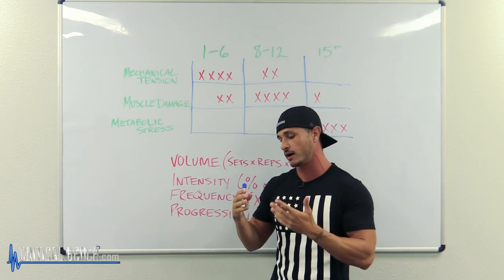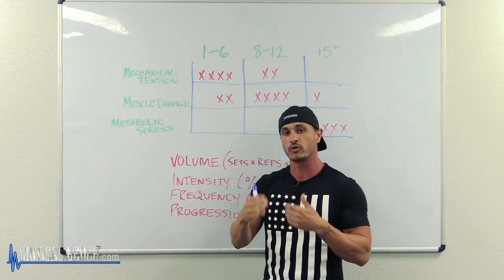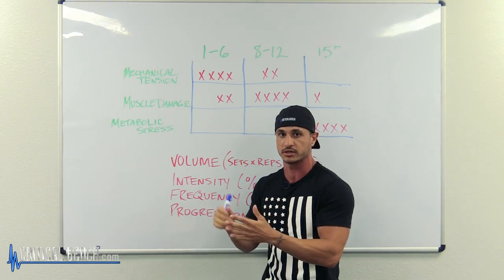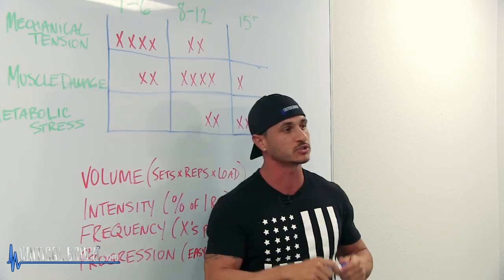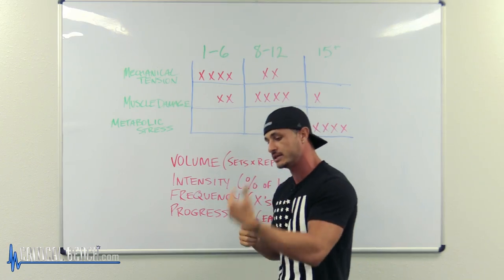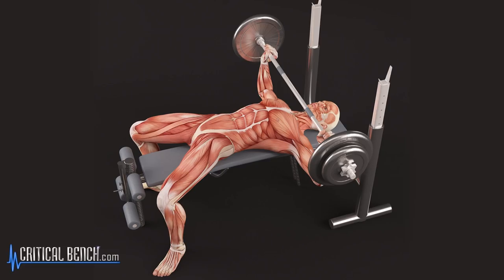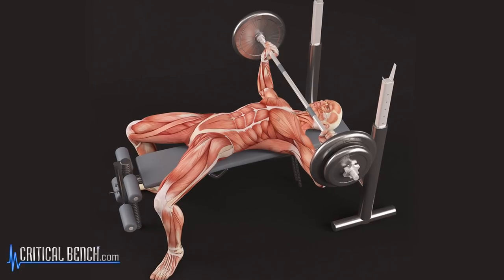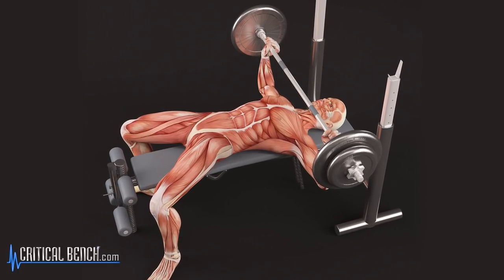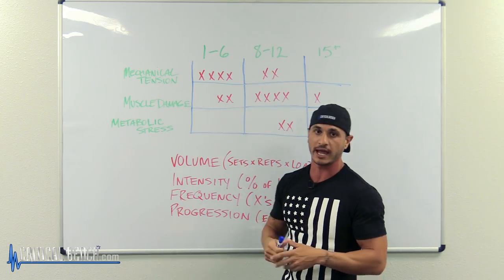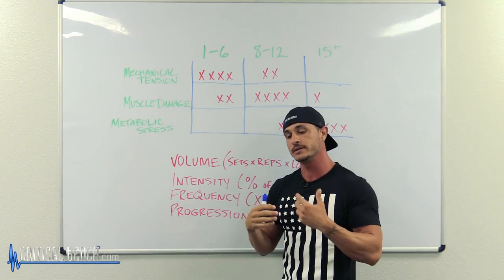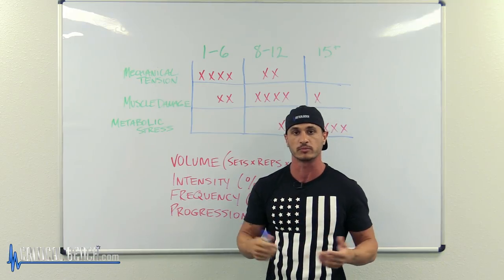When we train for mechanical tension, we are really increasing strength, and we are going to build a significant amount of muscle from focusing on mechanical tension. When we train for muscle damage, we are again going to be building muscle, mainly by the increase in volume, because the intensity is still moderate.